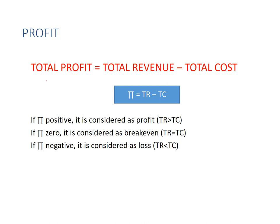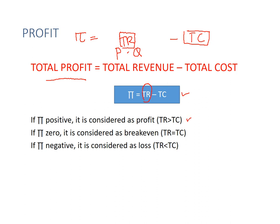Profit, as you may remember from Chapter 5 (Cost and Production), is total revenue minus total cost. Total revenue is P times Q — price per unit times the number of units sold. If total revenue is greater than total cost, you get positive profit. If total revenue is less than total cost, it is a loss — profit is negative. If total revenue equals total cost, profit is zero, which is break-even.